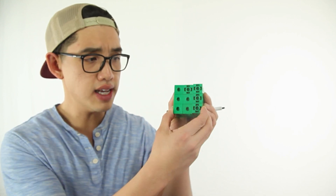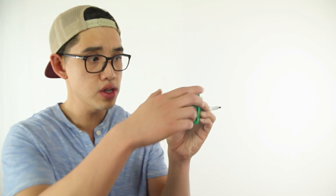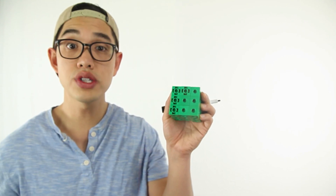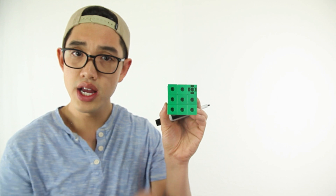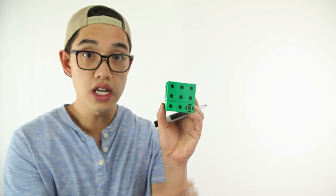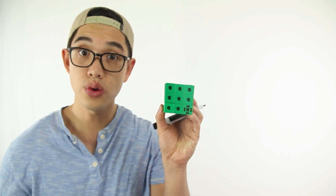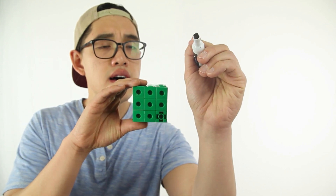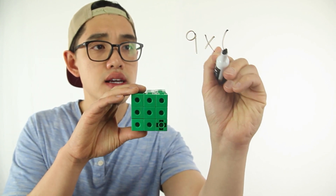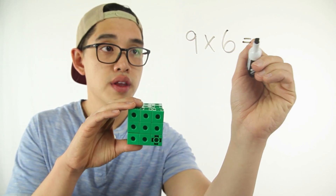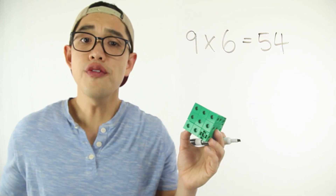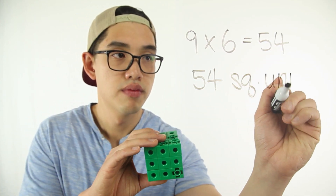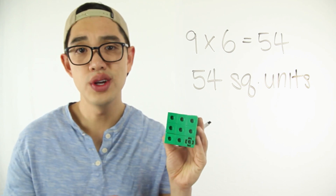If I flip it around, on the second side there are also nine squares. On the third side there are also nine squares. On the fourth side there are also nine squares. The fifth side right here, nine squares. And the sixth side, there are also nine squares. So what I can write is nine times six, and that's going to give me 54. So the surface area of this cube is going to be 54 square units.